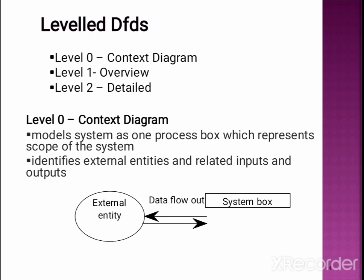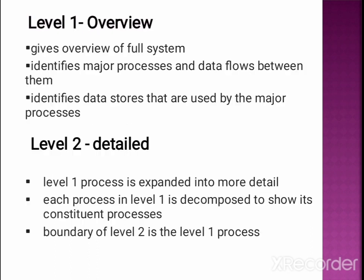Leveled DFDs: There are three types of levels — Level 0, Level 1, and Level 2. Level 0 is the context diagram, Level 1 is the overview, and Level 2 is the detailed diagram. In Level 2, each process from Level 1 is expanded into more detail and decomposed. The boundary of Level 2 is the Level 1 process.